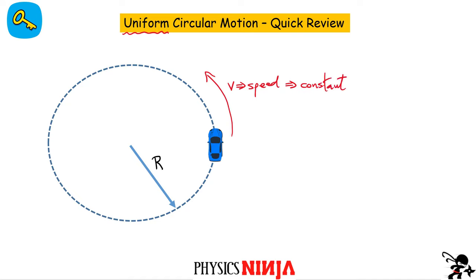It doesn't mean that the velocity is constant. If I'm going around in a circle counterclockwise, the velocity here would be tangent — that's how I would draw the vector. As I continue going around, the velocity vector is always tangent to the curve at each point. The magnitude of that vector is the speed, and that must be constant. But the velocity is always changing direction.